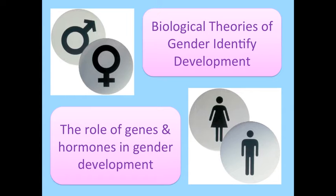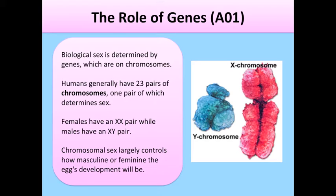Discuss the role of hormones and/or genes in gender development. Biological sex is determined by genes which are on chromosomes. Humans generally have 23 pairs of chromosomes, one pair of which determines sex.